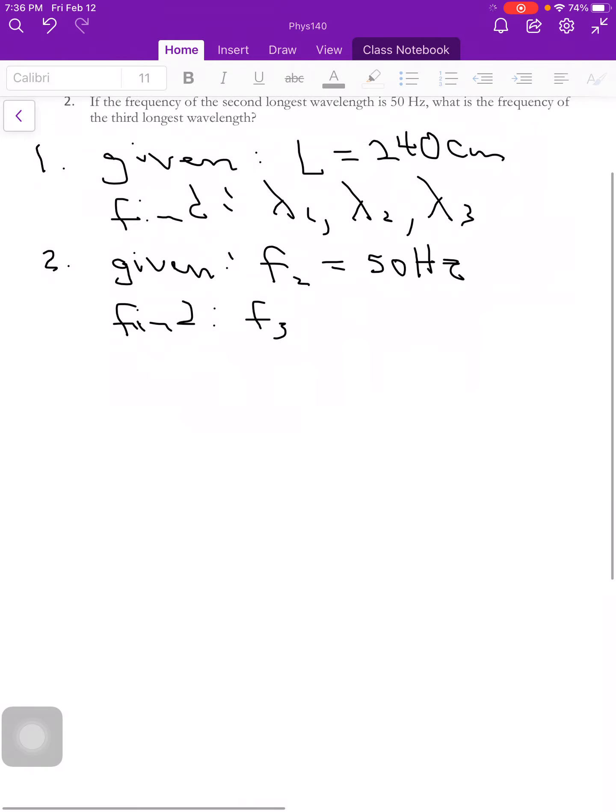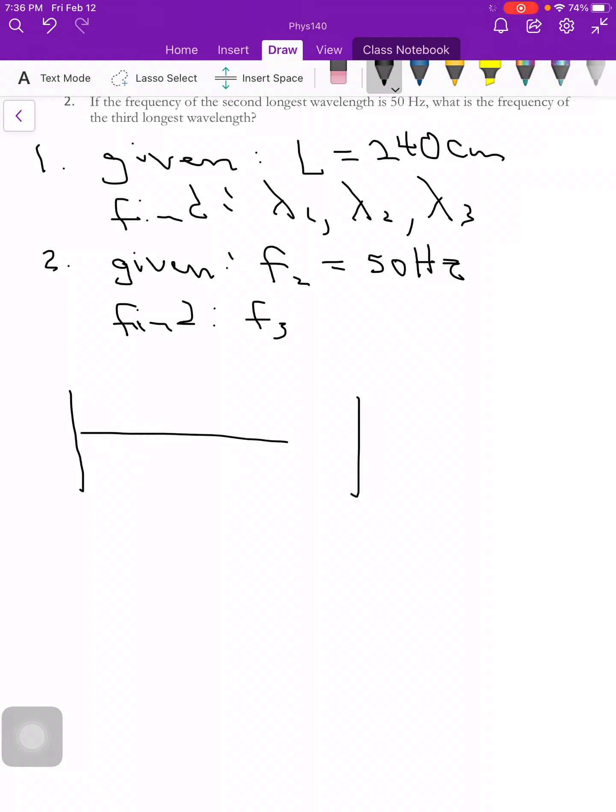So we've got two ends of a string. So we're going to do this. And so the longest wavelength, right, is going to be like this. And so if this is my L, I know that this is only half a wavelength, so I'm going to say L is equal to lambda over 2.